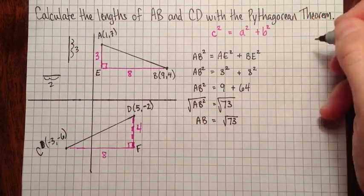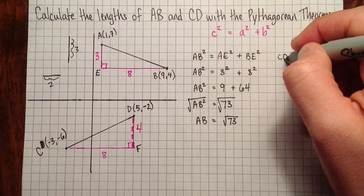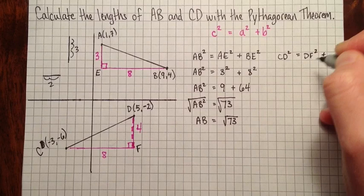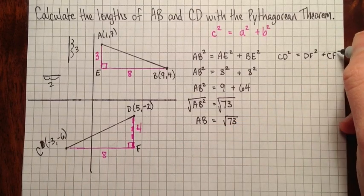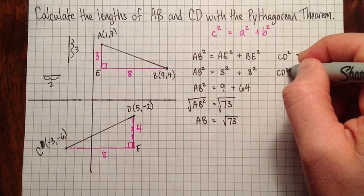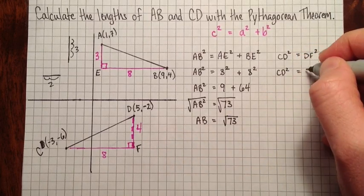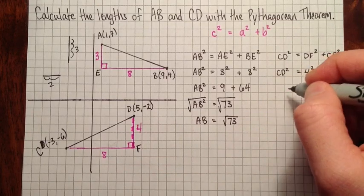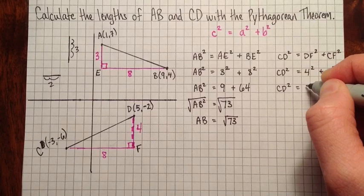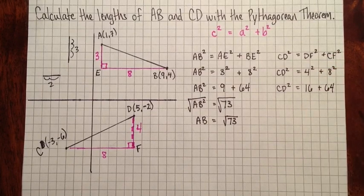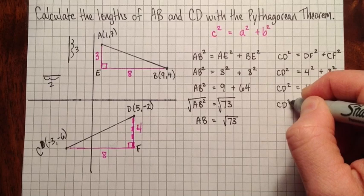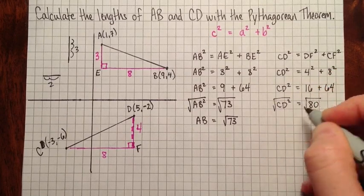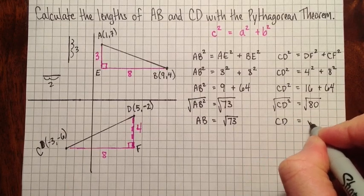Okay, so we have CD squared equals DF squared plus CF squared. So now I'll substitute the numbers. DF is 4 long, so we have 4 squared. CF is 8 long, so we'll have 8 squared. So CD squared is equal to 16 plus 64. So CD squared equals 80. And then I'll take the square root of both sides. So CD equals root 80.